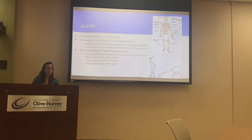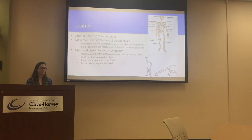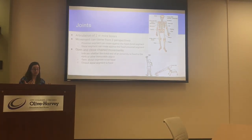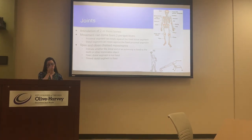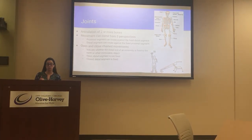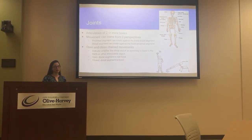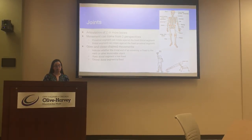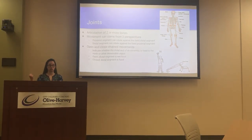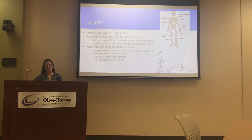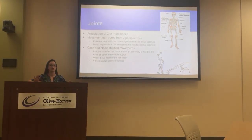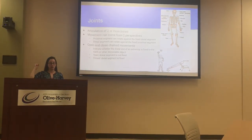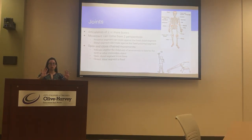Another hugely important thing in terms of movement of people is our joints. A joint is basically two bones coming together. Movement in terms of joints can come from two perspectives: the proximal segment can rotate against the fixed distal, or the distal segment can rotate against the fixed proximal. This really just ties into the idea of open and closed chain mechanics. Open would be something where you are not moving against a fixed object — like lifting a weight, you're pushing it against the air. Whereas closed, like doing a push-up, you are moving against an immovable object — the floor.